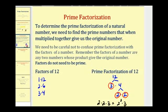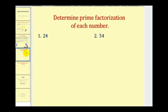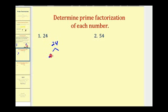Let's go ahead and try some additional examples. For number one, we're going to start with twenty-four and break it down into any of its two factors. We can obtain twenty-four by multiplying two and twelve. Two is prime, so I'll circle that.